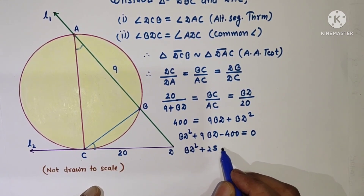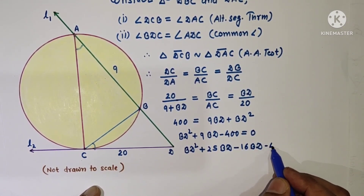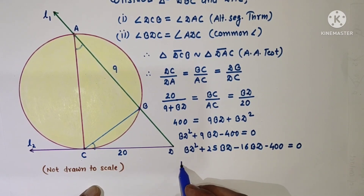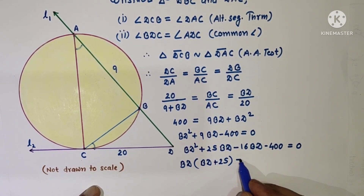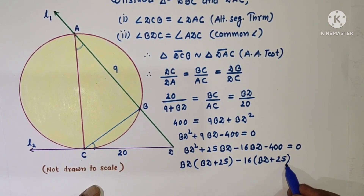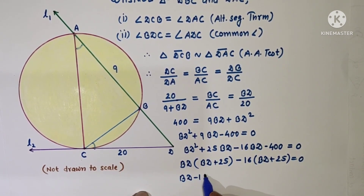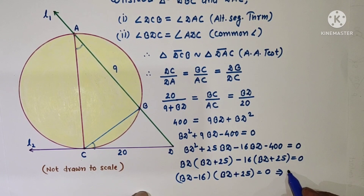Solving by middle-term splitting: BD² + 25·BD − 16·BD − 400 = 0. Taking BD common: BD(BD + 25) − 16(BD + 25) = 0, giving (BD − 16)(BD + 25) = 0. So BD minus 16 equals zero gives BD equals 16.